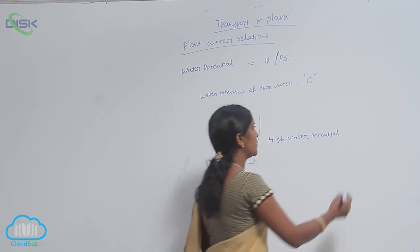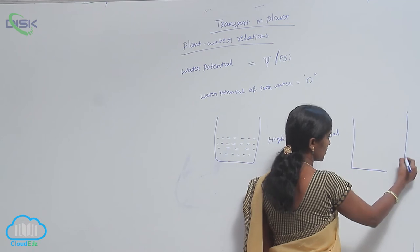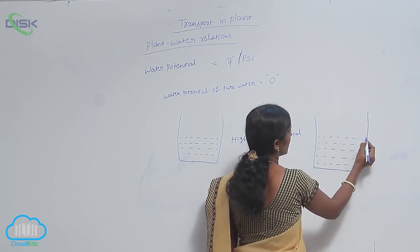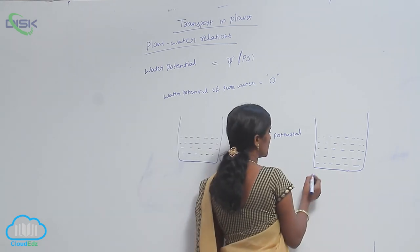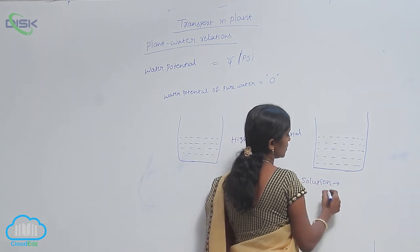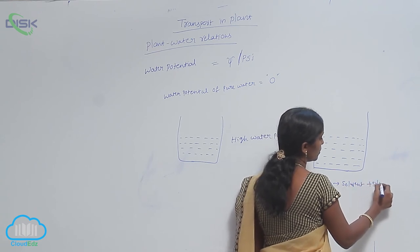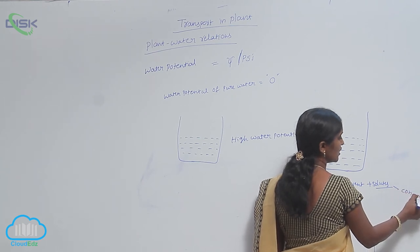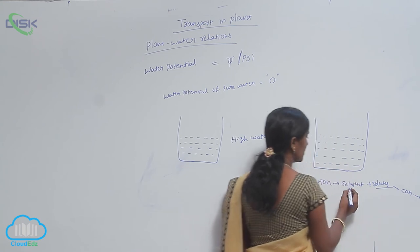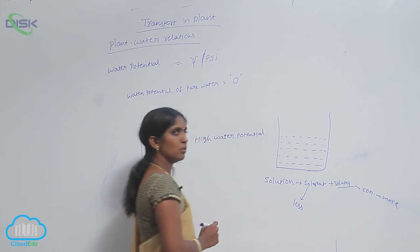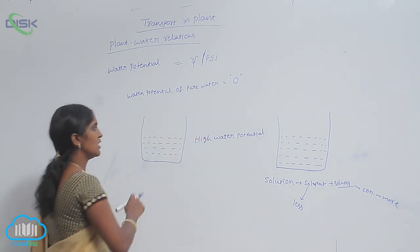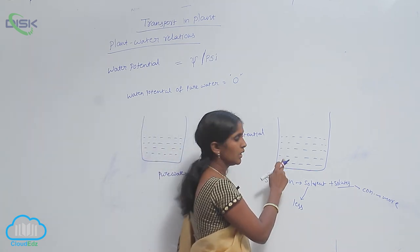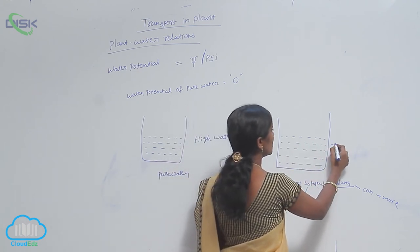If you take a mixture of water in the form of a solution, in the solution the solvent is dissolved with many solutes. The concentration of solutes is more, but the concentration of the solvent becomes less. Compared to pure water, the water concentration is less, which means the water potential is also less.